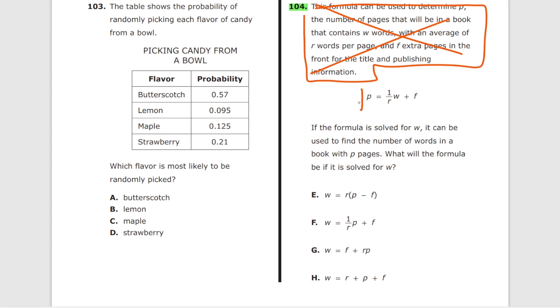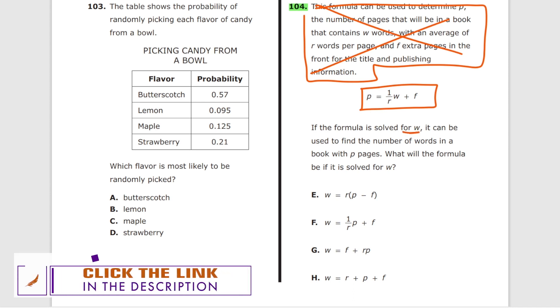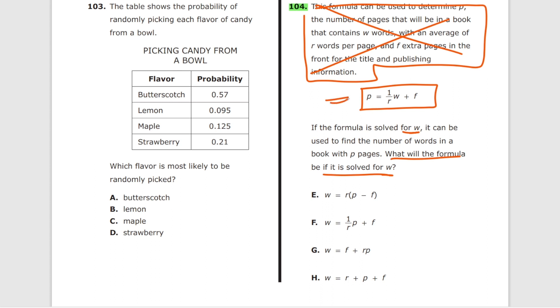Now we have this formula right here that we need to pay attention to. Now if the formula is solved for W, it can be used to find the number of words in the words P whatever. What will be the formula if it's solved for W? Essentially you just need this last sentence here and you need the formula itself. Okay. We got four different variables. We got P, we got R, we got W, we got F. Super complicated. Most of you will just skip this problem. But this problem or any multi-variable problems are actually super easy.